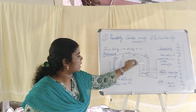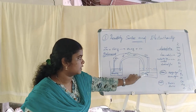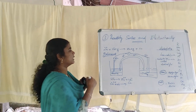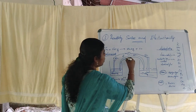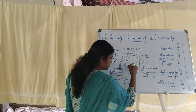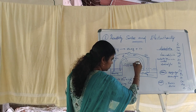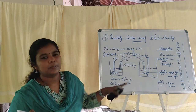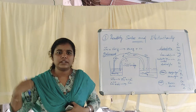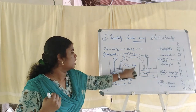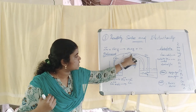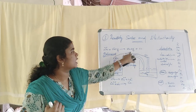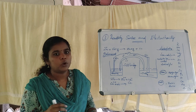The electrolytes used are zinc sulfate and copper sulfate. These two electrolytes are connected to each other. That connection is called the salt bridge. The salt bridge contains potassium chloride or potassium nitrate.